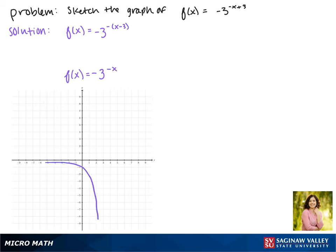Now since our function is raised to the negative x, that's a reflection across the y-axis. Now it's passing through the point.